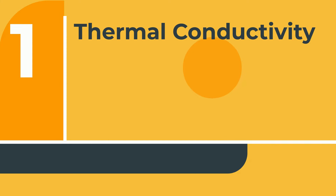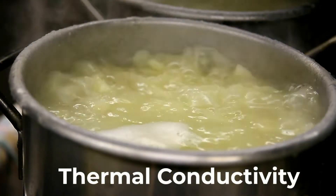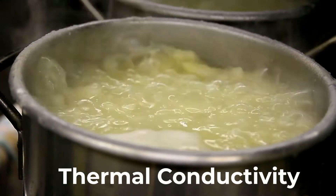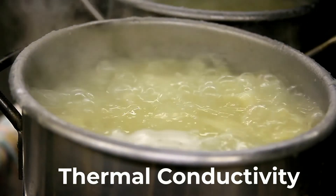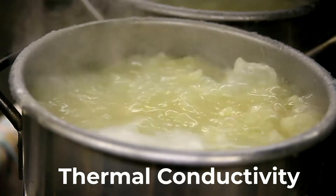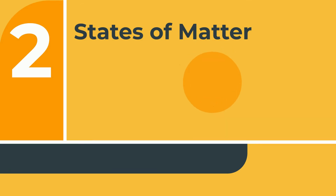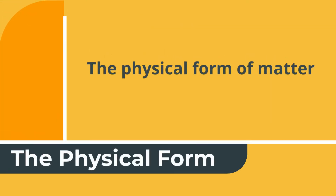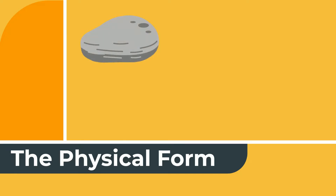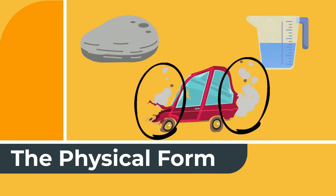1. Thermal conductivity – it's the rate at which a substance transfers heat. Metals are very good thermal conductors. 2. State – it's the physical form in which a substance exists, such as solid, liquid, or gas.